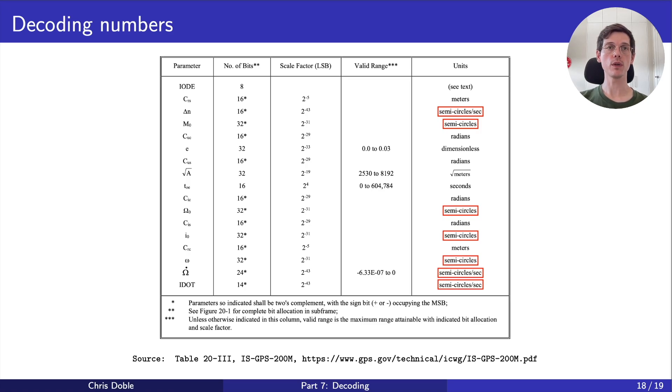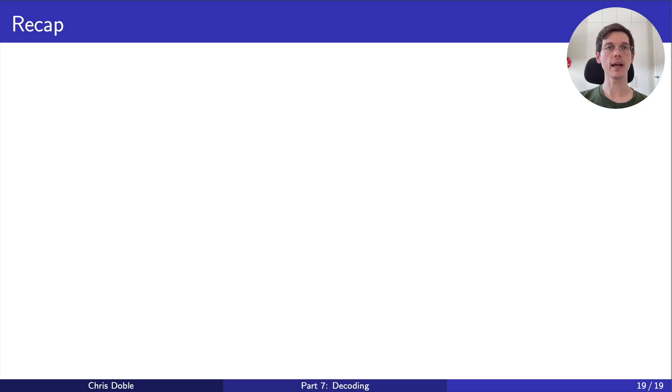And that's it for the decoding stage. Let's recap the important points. First, at the lowest level, the navigation message is made up of pseudosymbols, which are fragments of bits. As we move through the higher levels, we have bits, words, subframes, and finally frames.